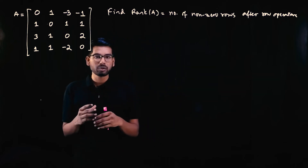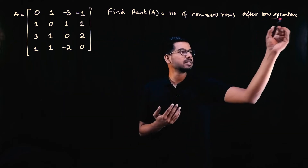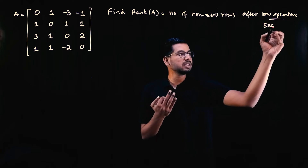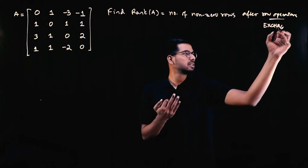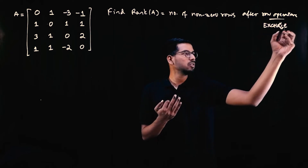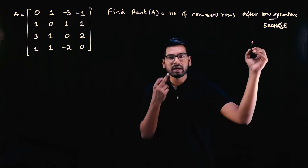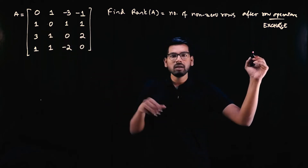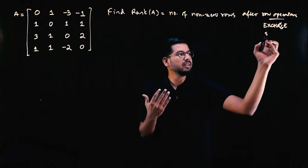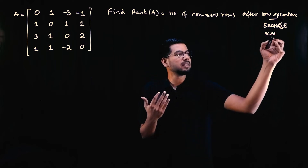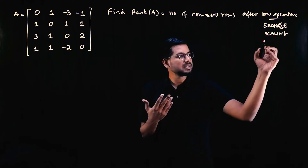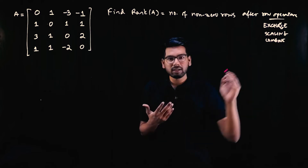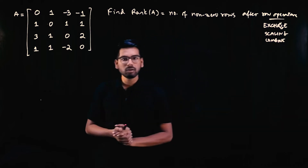There are three row operations: first, we can exchange two rows; second, we can multiply a row by a scalar k — this is called scaling; and third, we can combine two rows by adding or subtracting them.